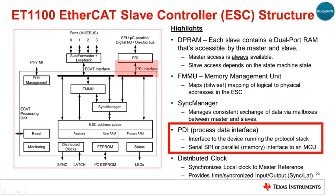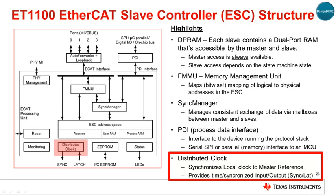The Process Data Interface, or PDI, connects the EtherCAT slave controller to the application controller, typically an MCU, which runs the protocol stack. Multiple interface types are supported, including serial, SPI, and parallel buses. The Distributed Clock Unit provides for the synchronization of a reference clock, typically sourced from the master, and the local clock. The presence of this block enables fine less-than-one-microsecond control of events and capture of data timestamps.